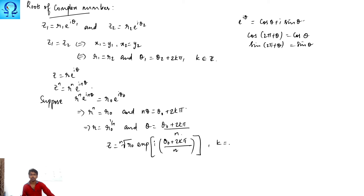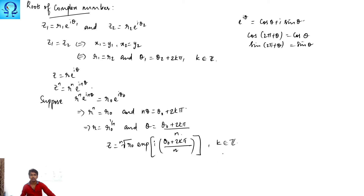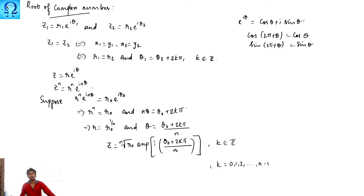So we can write z as the nth root of r-naught multiplied by the exponential of i times (theta-naught plus 2k*pi) over n. Here k can be any integer, but to identify only the distinct roots we restrict k to run from 0 to n minus 1. This gives us n different values, which are the distinct nth roots of any complex number.